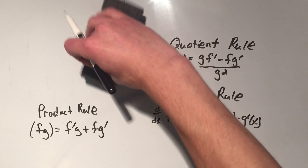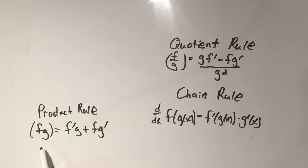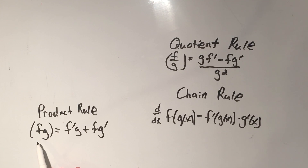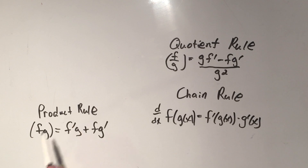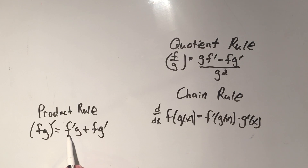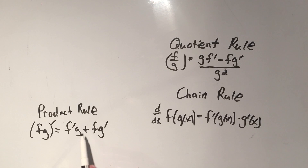After you learn the power rule, you learn the product rule. That's when you have a product, or a multiplication of two functions, I call them f and g. It says that if you want to take the derivative of this product, you take the derivative of f times g, plus f times the derivative of g.